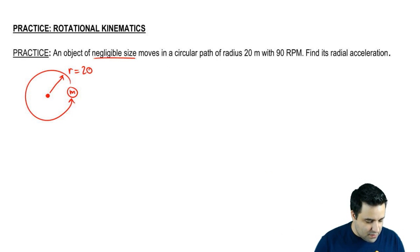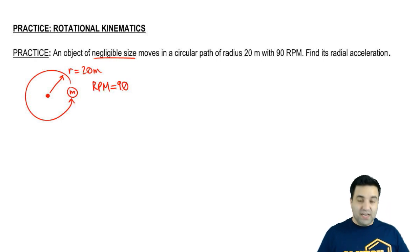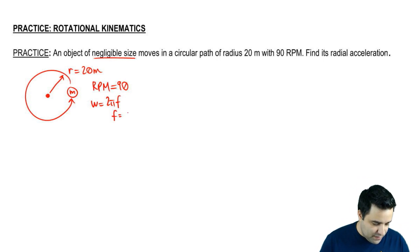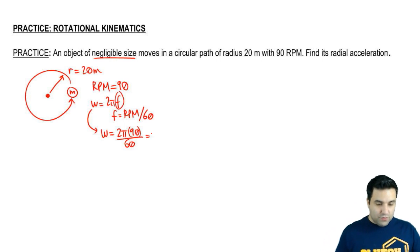So the little r, the distance to the middle, is 20 meters. And it does this with an RPM of 90. 90 RPM, which I can convert. If you remember, W is 2 pi F and F is RPM over 60. So I can use these two to write that omega is 2 pi RPM over 60. So 90 over 60. And if you do this, you get 3 pi.